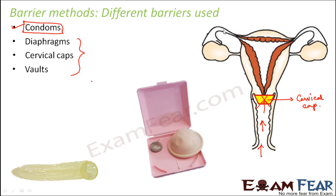And where is the egg? The egg is sitting somewhere in the fallopian tube. So the sperm actually needs to reach there only if fusion has to happen. They are blocked here — that is how it acts as a barrier. Similarly, you have vaults which look like this, and they are also used in a very similar way as the cervical cap. They also block the entry of sperms.